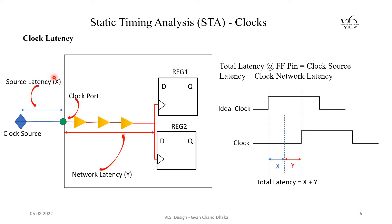Let us assume the source latency is x nanoseconds. Once the clock is available at the clock port of our design, the clock signal has to travel from there to each of the sequential elements in our design. The delay from the clock port to the clock pin of those sequential elements is called network latency, and this occurs because of the buffers inserted as part of our clock tree. Assume the network latency is y nanoseconds.